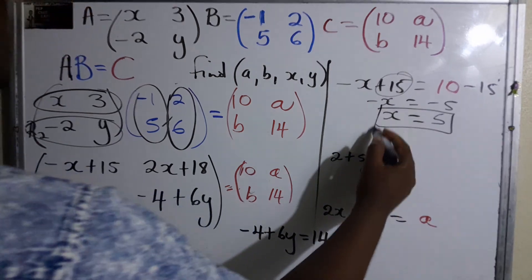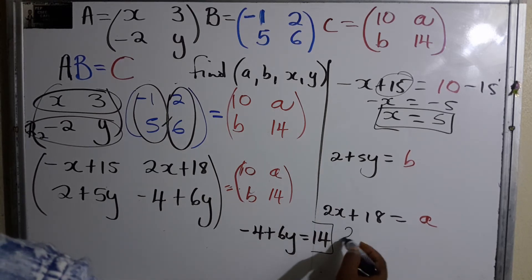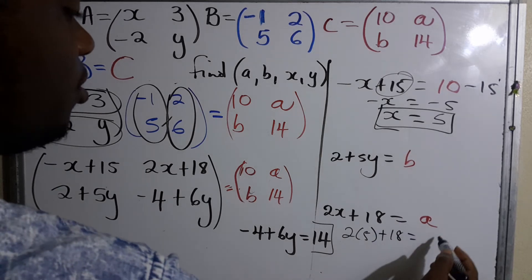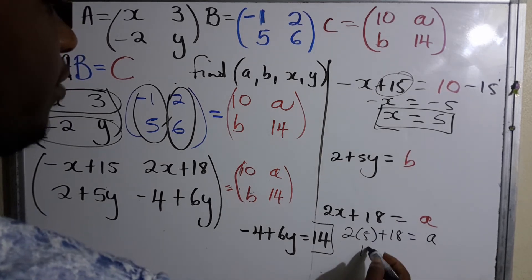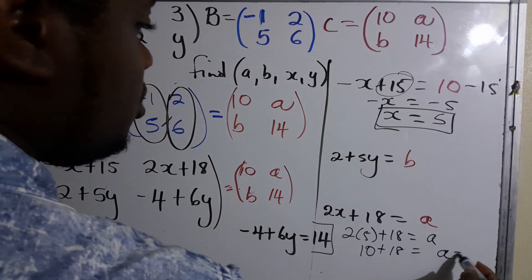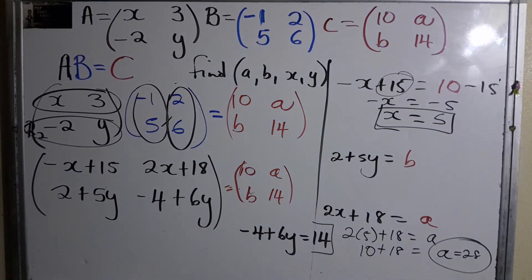So the value of x is 5. Now that we know x is 5, we can actually solve for this one right here: 2 times 5 plus 18 equals a. So 2 times 5 is 10 plus 18. Therefore, a is equal to 28. So we got a.